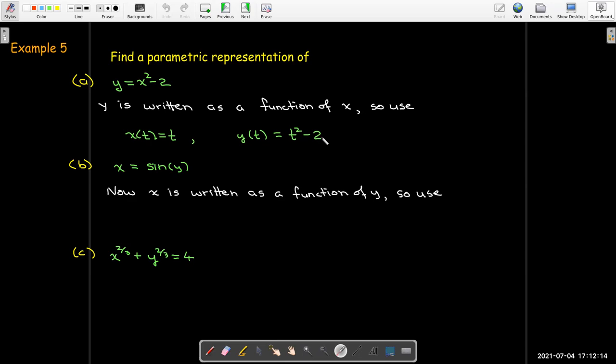We will use the same kind of idea in part b. x is written as a function of y. So y is the independent variable. That is going to be just set equal to t. And then I'll replace y with t in the equation to get the formula for x of t.